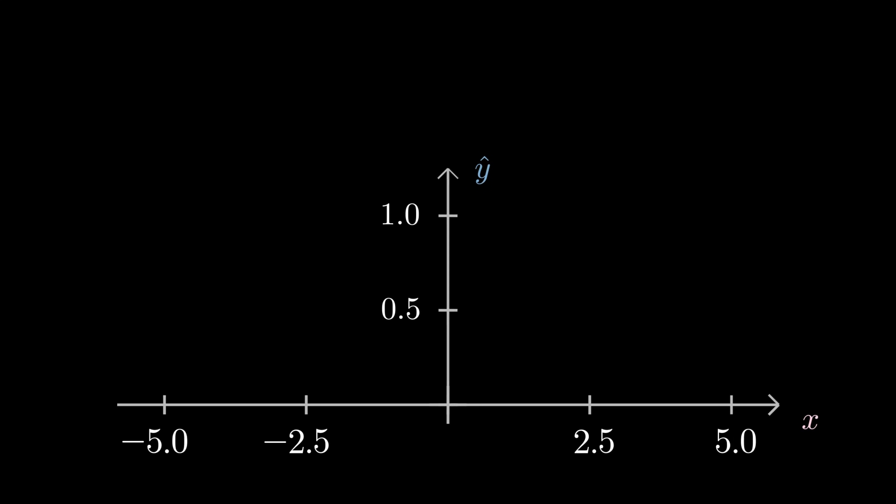If you recall, the idea behind sigmoid was to smoothen out the Heaviside step function. This allowed us for a range of inputs or a probability. Smoothing out this function also allowed for differentiability, which will be important when we talk about training a neural network.